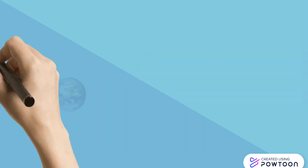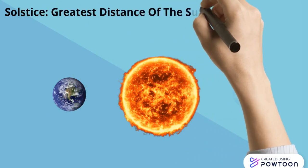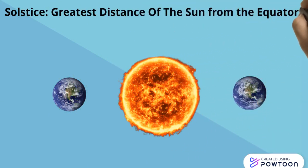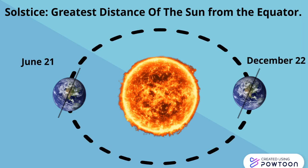Now, solstice. Solstice is the greatest distance of the sun from the equator. As you can see in this figure, solstice occurs two times in the year, that is on June 21 and December 22.